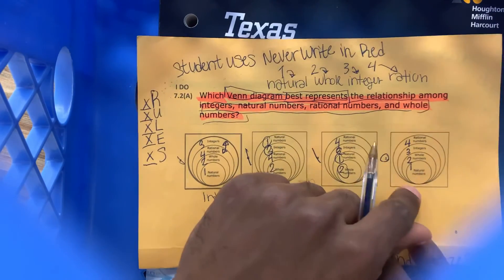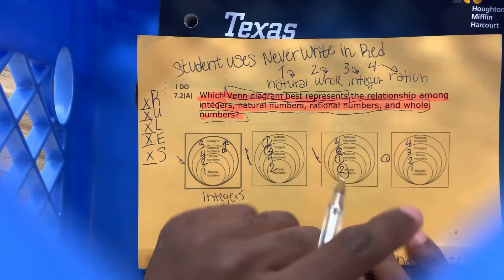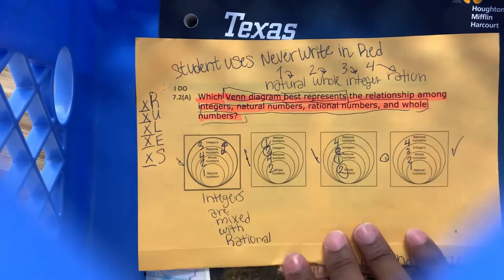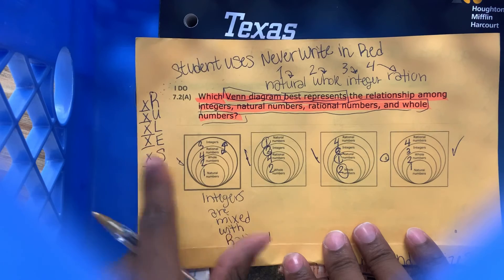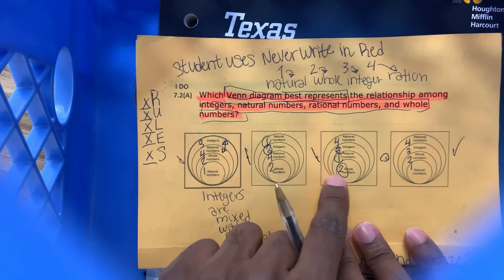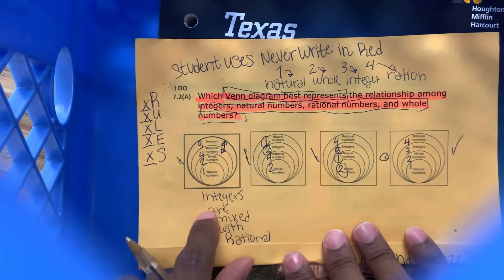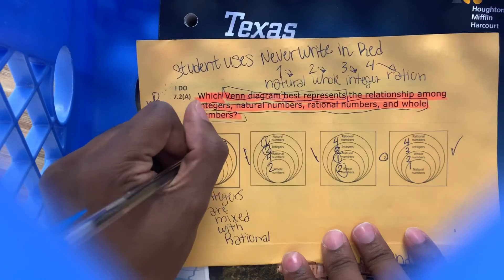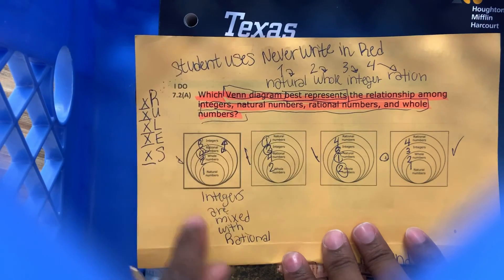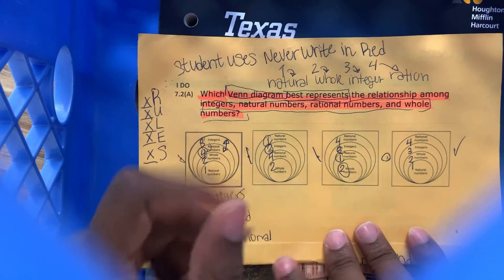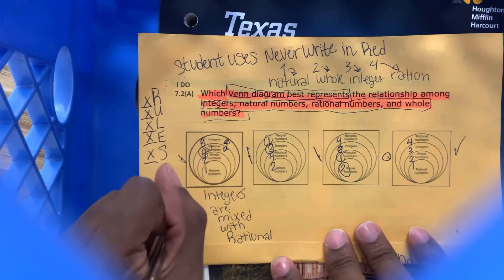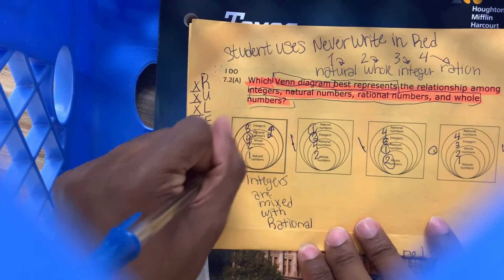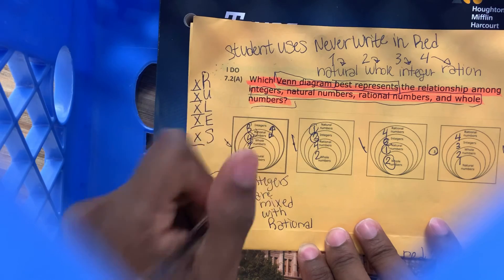The correct answer is J — Never Write In Red: 1, 2, 3, 4. This is our answer. We eliminated the incorrect answers because we know they're out of order, and then we select our correct answer. The correct answer is J. Hope this video helps — see you all in the next video.